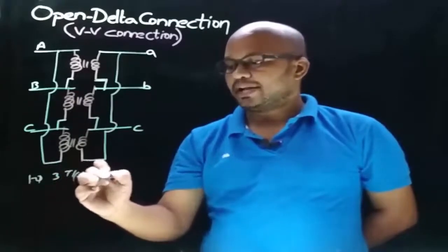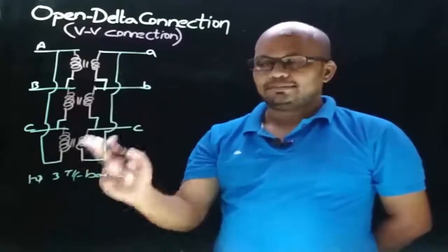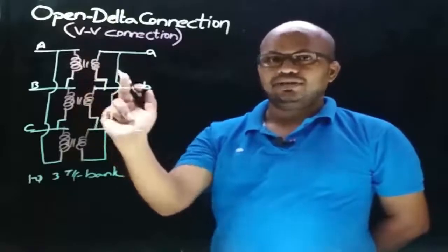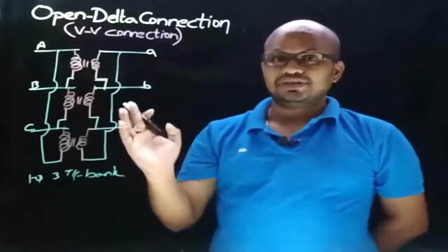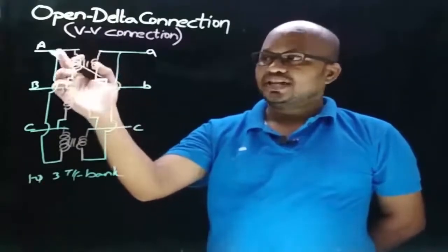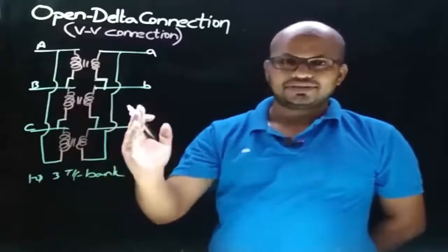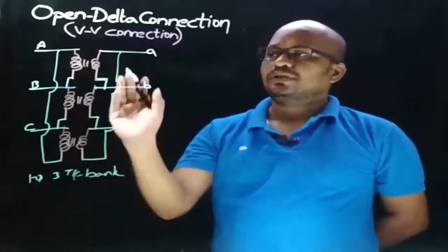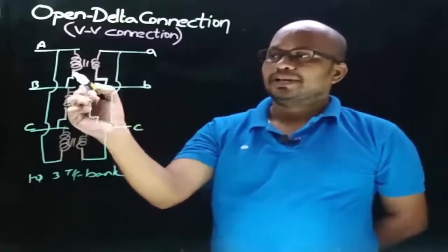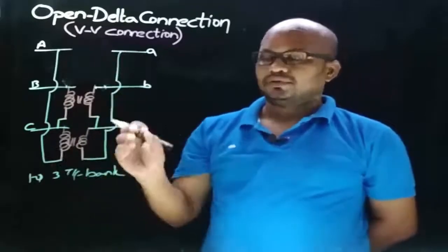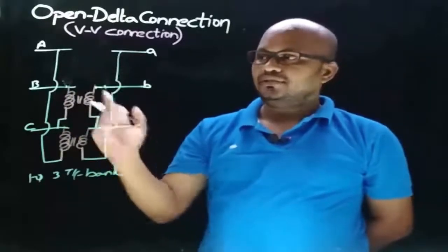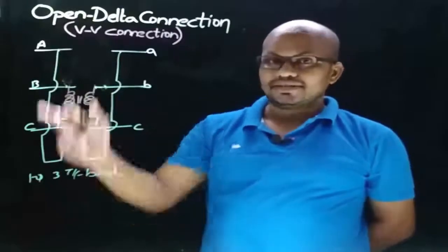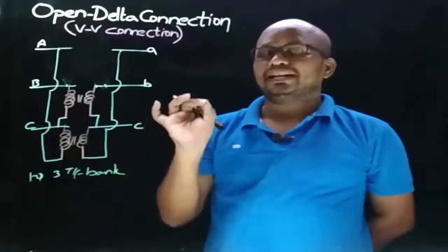This is how the delta-delta connection is obtained for a single-phase three-transformer bank. Open delta connection means if one of the transformers in this bank gets failed, then the resultant connection is called open delta connection. Let's consider transformer one got failed. We are transferring three-phase power with phase sequence ABC from the primary side to the secondary side. After removing transformer one from this bank, we can still maintain the three-phase supply with the same phase sequence ABC.